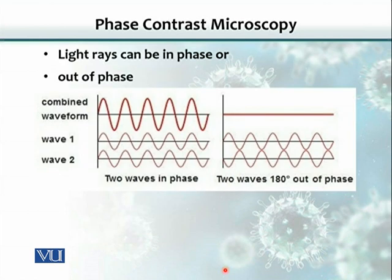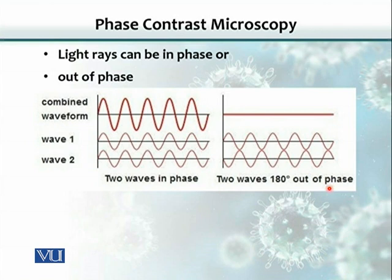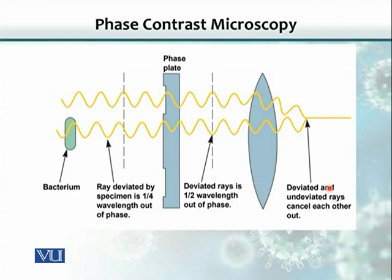Another one is phase contrast microscopy. It also does not use any stain, and we can study the cells in vitro as live cells. The principle behind phase contrast microscopy involves light traveling in waves. If two waves follow each other in all aspects — trough follows trough, peak follows peak — we call them in phase. If the trough of one wave is superimposed on the peak of another, those two waves are 180 degrees out of phase. This principle of phase change is used in phase contrast microscopy.